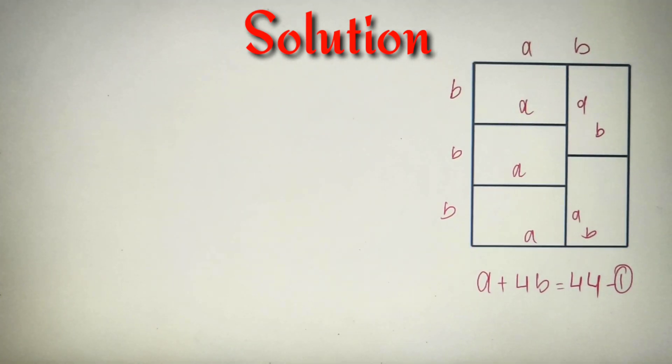Now since we have taken two variables A and B, we have to form two equations as well to solve them. We can say capital X times capital Y equals 5AB, because XY denotes the area of the bigger rectangle, and 5AB will also become the area of the bigger rectangle.